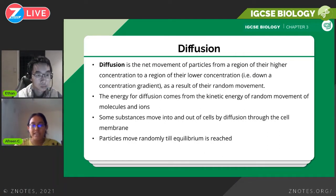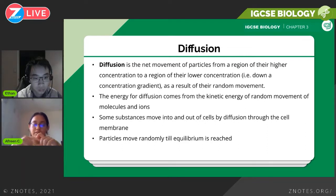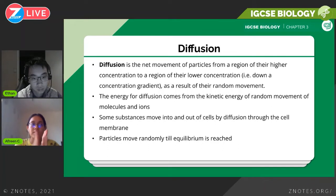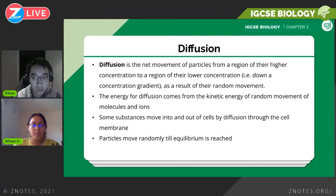Diffusion is a result of the random movement of particles — this is basically the kinetic energy of the particles. This could come up in MCQ or in Paper 4, the structured questions. All cells have cell membranes that control the particles moving in and out. Diffusion will occur until equilibrium is reached, when the concentration is equal on both sides of the membrane.